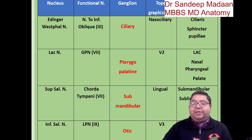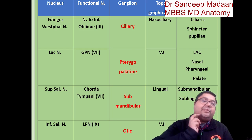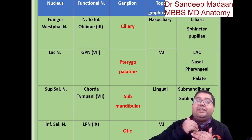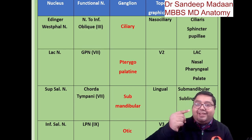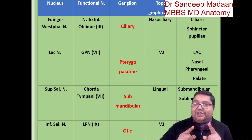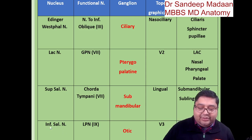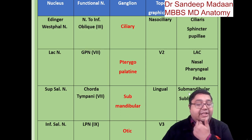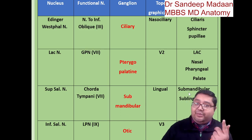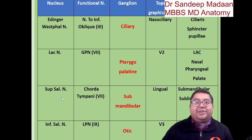Something interesting: look at the positions of the parotid and the submandibular gland. The parotid is superior in position, but its nucleus — the inferior salivary nucleus — is inferior. The submandibular gland is inferior in position, but its nucleus — the superior salivary nucleus — is superior. So it is just the other way around.